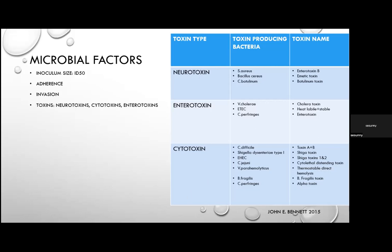A table of toxins and their producing organisms: neurotoxins — Staph aureus, Bacillus cereus, Clostridium botulinum; enterotoxins — Vibrio cholerae, enterotoxigenic E. coli, Clostridium perfringens; cytotoxins — C. difficile, Shigella dysenteriae type 1, enterohaemorrhagic E. coli, Clostridium jejuni, Vibrio parahaemolyticus, Bacillus fragilis, and Clostridium perfringens.